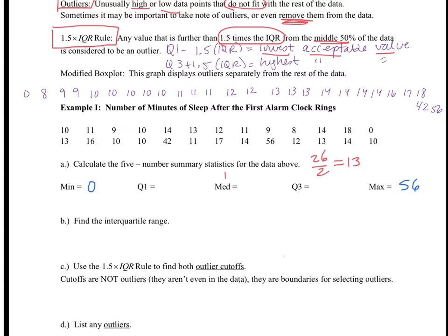So, to get my median, I'm going to average the 13th and the 14th data point. So, if we count into there, the 13th would be right here at this 12. Therefore, my median would fall right in the middle. So, my median is 12 minutes.